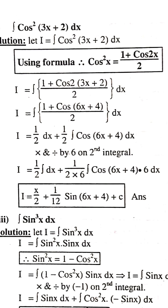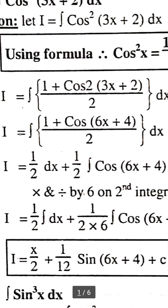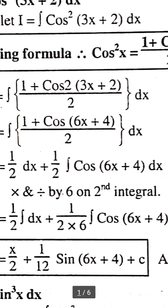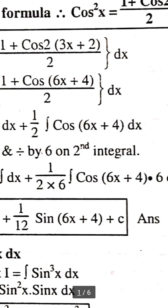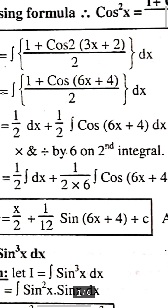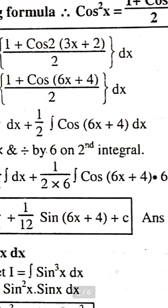So we get integration of [1 + cos2(3x + 2)] / 2 dx, which gives us [1 + cos(6x + 4)] / 2. Now let u = 6x + 4. We know integration of cosx = sinx, so we get x/2 + (1/12)sin(6x + 4), replacing u back with 6x + 4.